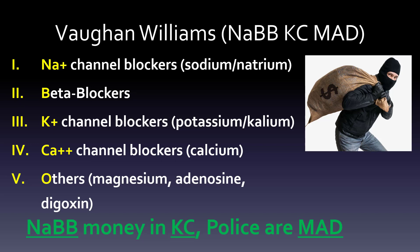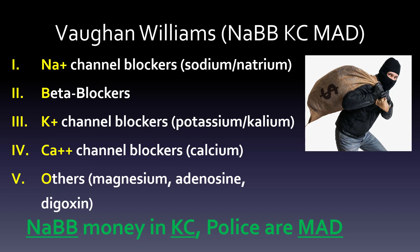I made a little story: 'NAB money in Kansas City, police are mad.' This is a way to remember that number 1 is NA — actually from natrium, meaning sodium — so sodium channel blockers. The B in NAB (you can put two B's) stands for beta blockers. Kansas City represents classes 3 and 4: K for potassium (kalium), and CA for calcium channel blockers. Then MAD — the others in the fifth group — are magnesium, adenosine, and digoxin.